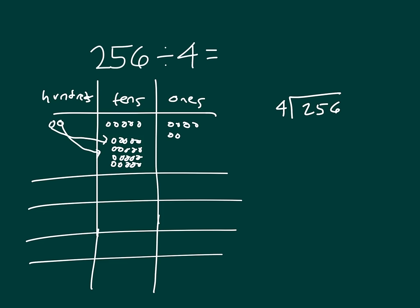So now I have 25 tens that I am trying to divide by 4. 25 tens divided by 4 goes in 6 times. Since I'm working in the tens place, that's why I write that 6 right over the 5 there. 6 times 4 is 24, and 25 minus 24 is 1.